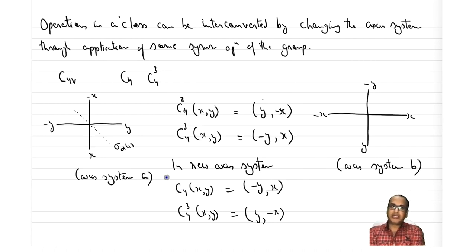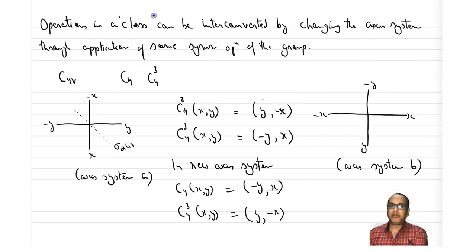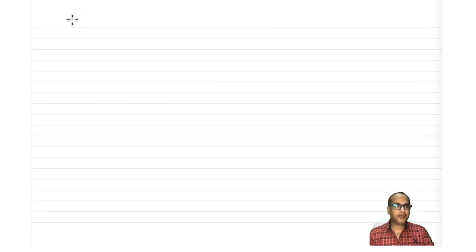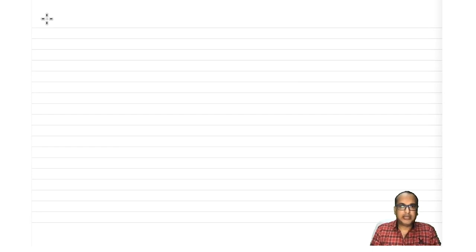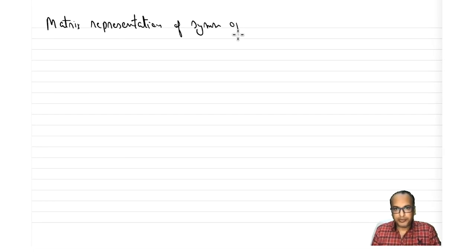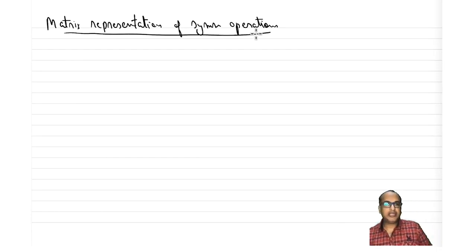Now that we have understood the physical significance and know how to classify, we will see later why finding elements that belong to one particular class is so important — we will see that in matrix representation, which will come in one or two lectures. This finishes the discussion of subgroups and classes. The next important topic is matrix representation of symmetry operations.